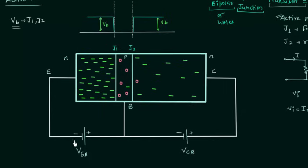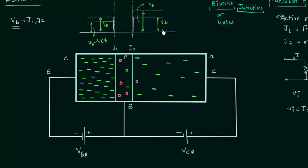Junction J1 is forward biased after the application of VEB, so the barrier potential will reduce. The new barrier potential is VB minus VEB. On the other hand, junction J2 is reverse biased so the barrier potential will increase. The new barrier potential is VB plus VCB. Because of the reduced barrier potential at junction J1, the electrons on the N side (the emitter) will cross the junction and move to the base and recombine with the holes in the base.